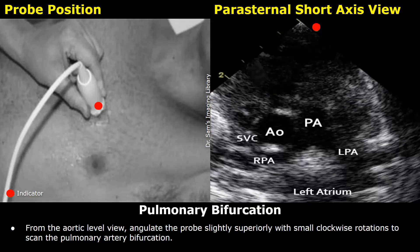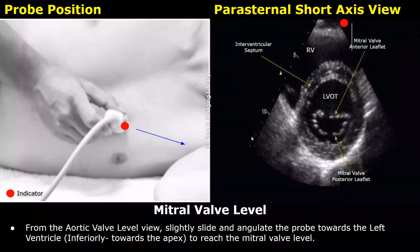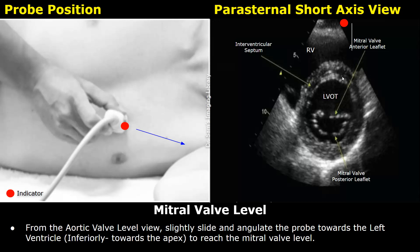To reach the mitral valve level, slightly slide and angulate the probe downwards towards the left ventricle apex from the aortic valve level view. The right ventricle appears at the top of the image, then the echogenic interventricular septum, then the left ventricular outflow tract where we see the mitral valve leaflets. The anterior leaflet of the mitral valve is seen above the posterior valve leaflet.